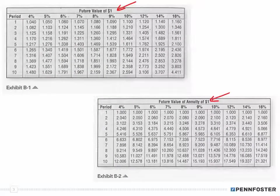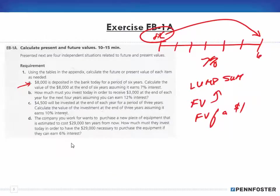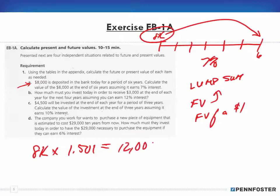I go to the future value of a dollar table, cross-reference 7% interest and six periods, and get a factor of 1.501. Multiplying $8,000 by 1.501 gives $12,008. That's all there is to it — identify what table to use, find the factor, and multiply.